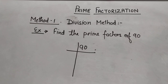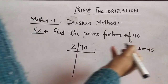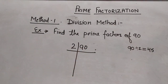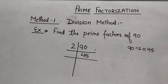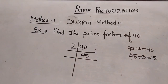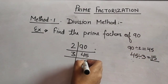We write 2 to the left of 90, and 90 divided by 2 is 45. We write 45 below the dividend. Now, 45 is an odd number, so it is not exactly divisible by 2. We move to the next prime number, which is 3. We divide 45 by 3, which gives 15. We write 3 to the left of 45 and the quotient 15 below the dividend.